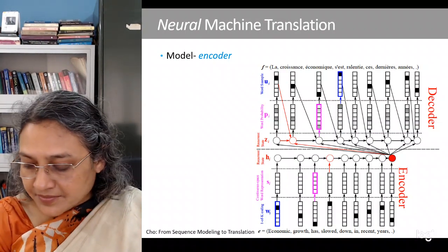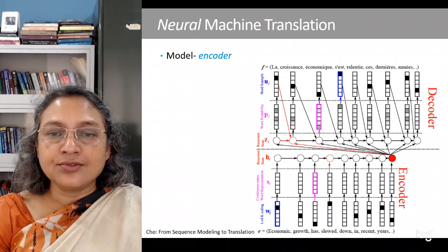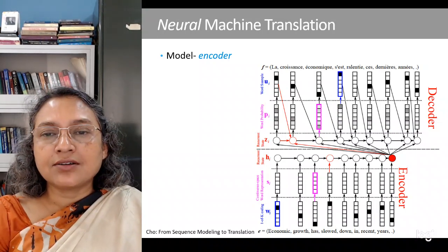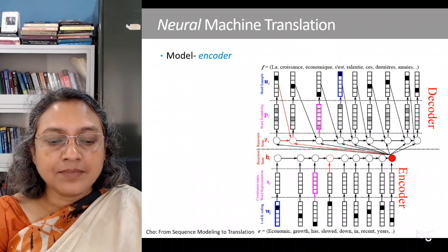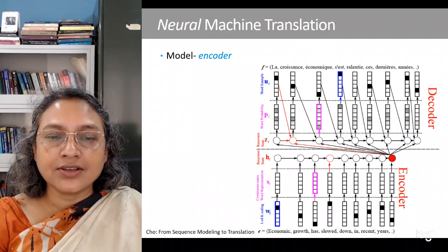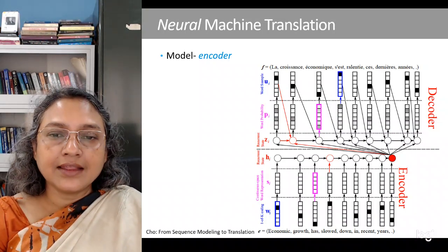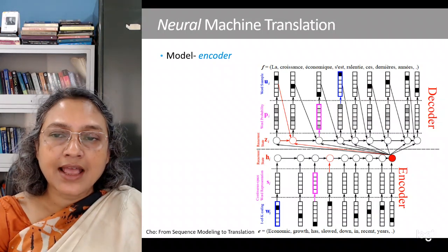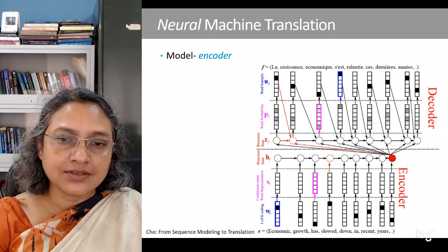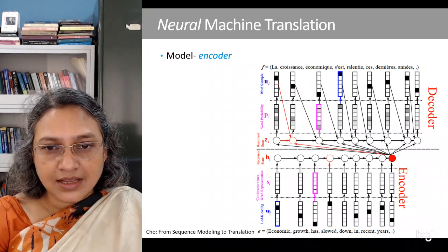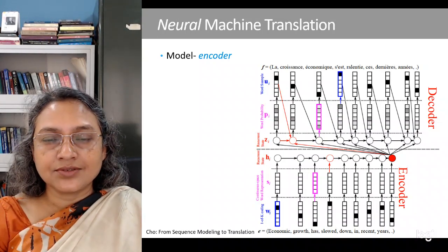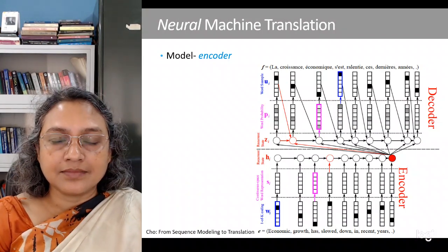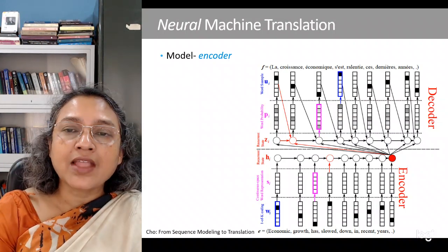Machine translation has gone through several phases. In the first phase there was rule-based machine translation, which was not very successful. Then people worked on statistical machine translation based on conventional machine learning using the noisy channel model. Then came neural machine translation. In the last couple of years, neural machine translation has become so successful that starting from late 2016 and 2017 onwards, most standard methods for machine translation follow this approach.